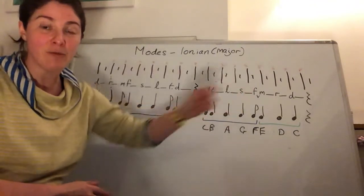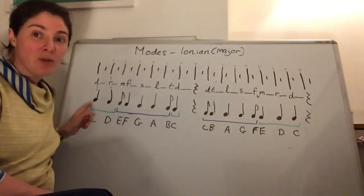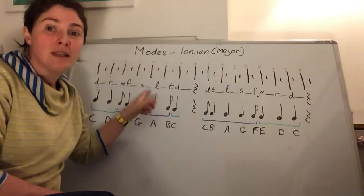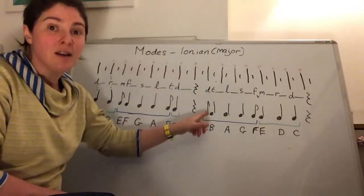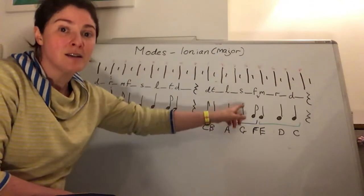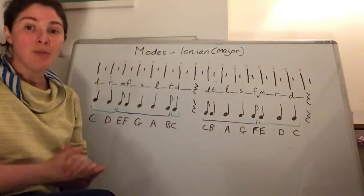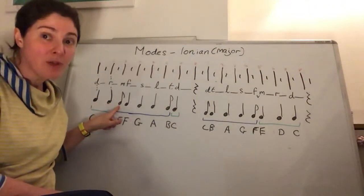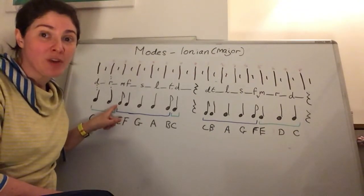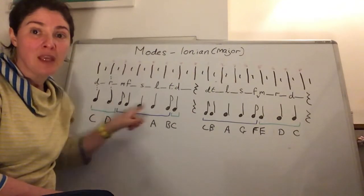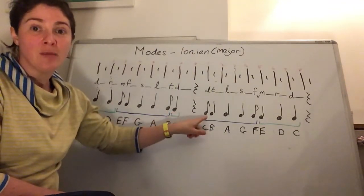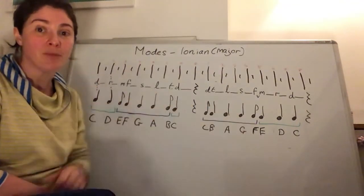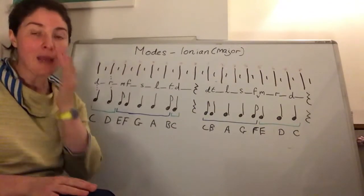If I turn those into rhythm notes it goes: ta ta ti-ta ta ta ta ta, ti-ta ta-ta ti-ta ta-ta — rest. Every time we get a semitone in our scale, the first note of that semitone becomes a quaver. Going down, the quaver is on the do, and the quaver is on the fa — because we're coming down. So each semitone pair creates a ti-ta pattern in the rhythm.